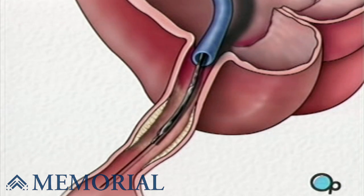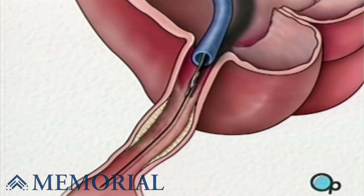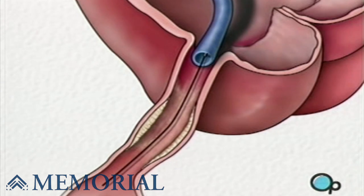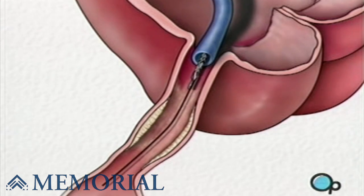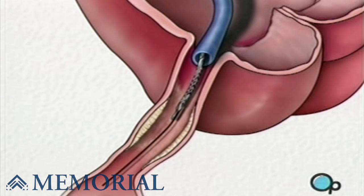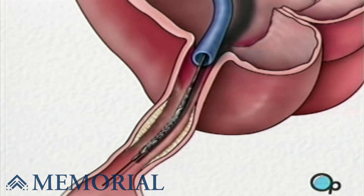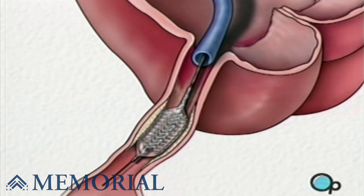The balloon catheter is then withdrawn and another balloon catheter is inserted. This balloon has the mesh stent tube wrapped around it. Once this tube has been placed in the center of the now-widened area of the artery, the balloon is briefly inflated. The stent expands until it hugs the walls of the artery.